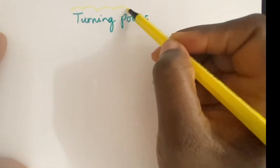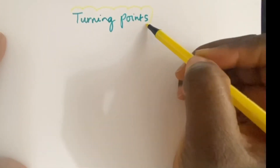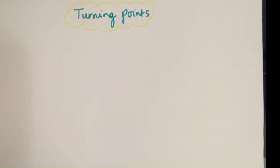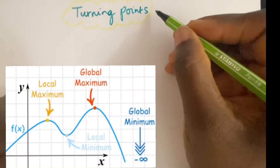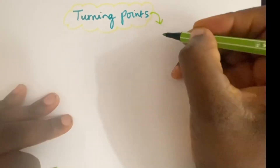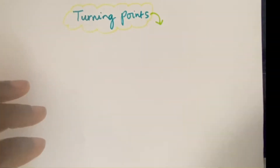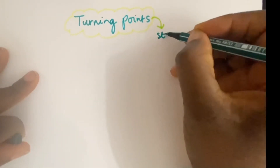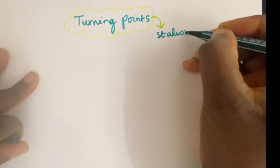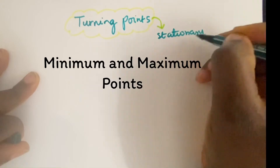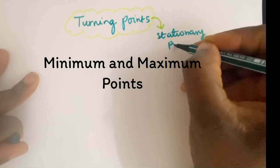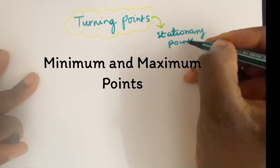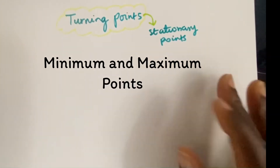Hello and welcome back. In today's lesson we're going to be looking at turning points, particularly stationary points. You can have maximum points and minimum points which are stationary points, but you can also have a point of inflection — altogether these make up turning points. Today we shall be focusing on minimum and maximum points, which are stationary points.